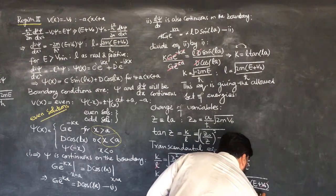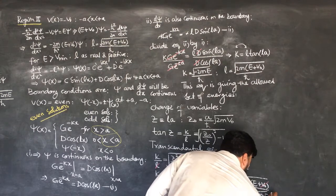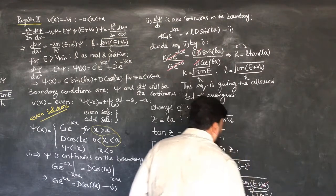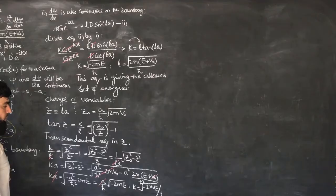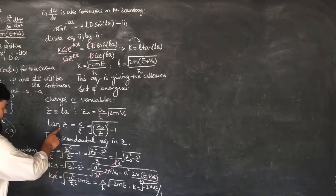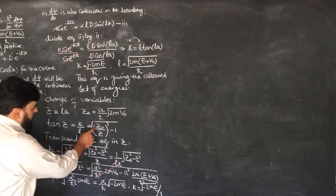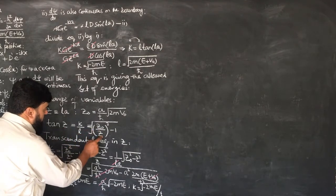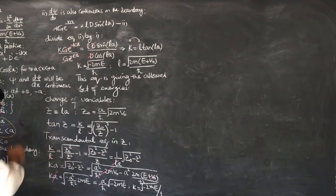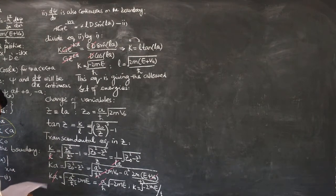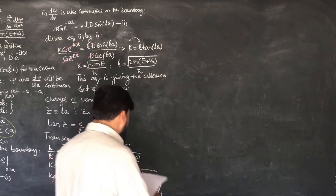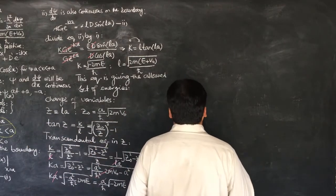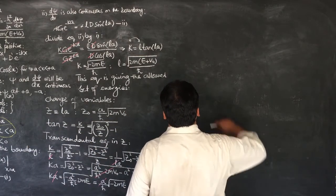This is equal to minus 2me over h-bar, and this is true. So we have proved that tan(z) can be written as (z₀/z)² minus 1, square root. So I can now plot the solution of the equation.